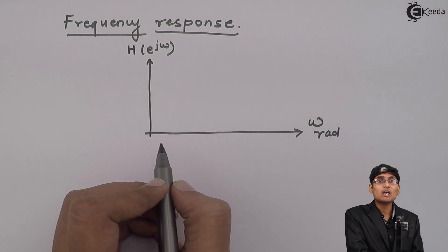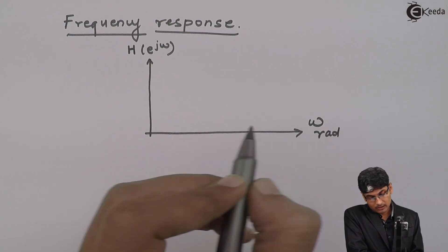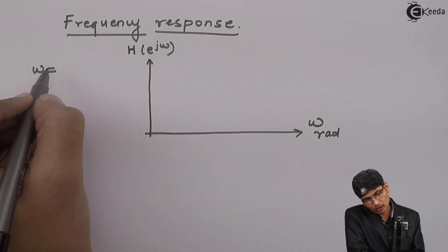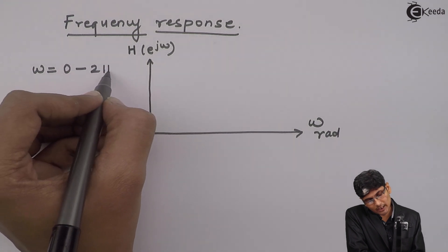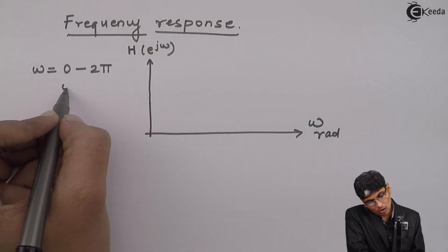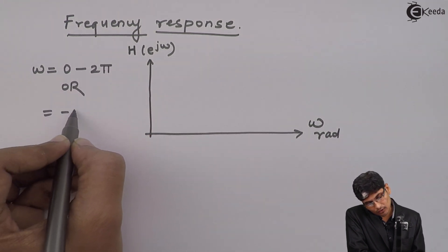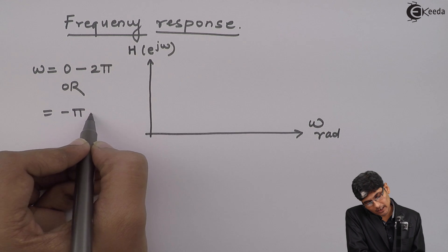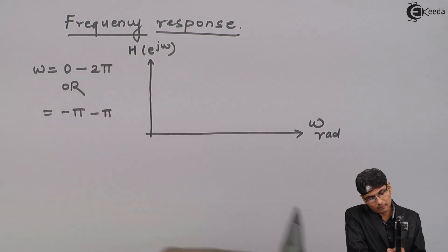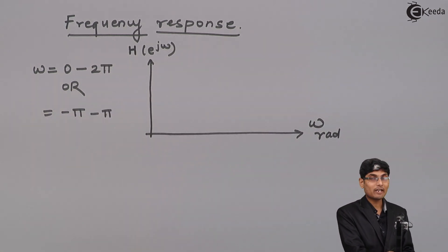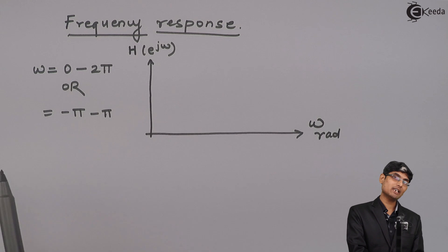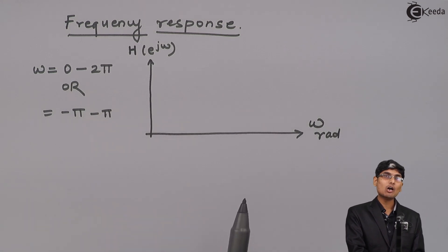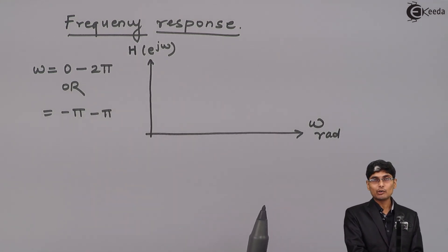Now, omega can take values from 0 to 2π, or it can take values from −π to π. So I can have a function drawn from either −π to π or from 0 to 2π.